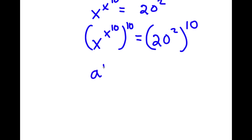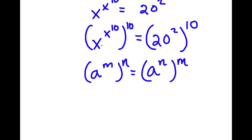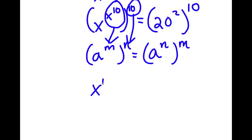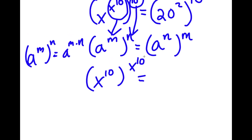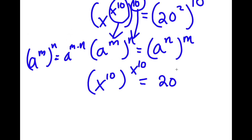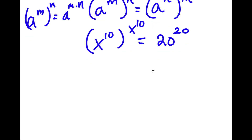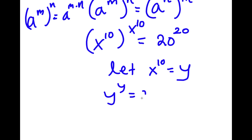If I have something in the form a to the power of m to the power of n, this equals a to the power of m times n. We can think of x to the power of 10 as m and 10 as n, and switch these two places. So now I have x to the power of 10, to the power of x to the power of 10. And 20 to the power of 2 to the power of 10 is the same as 20 to the power of 20. Now I'm going to let x to the power of 10 equal the variable y, so I have y to the power of y is equal to 20 to the power of 20.